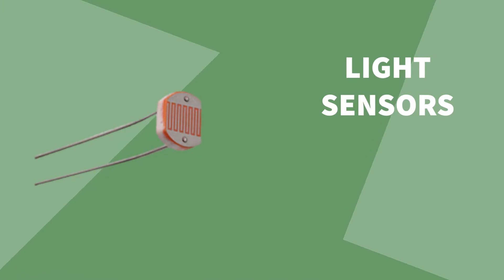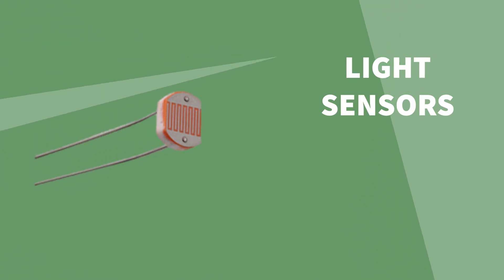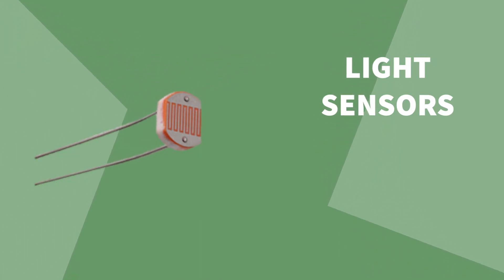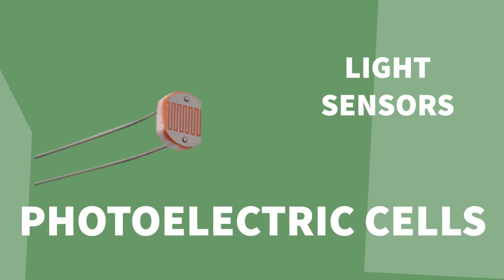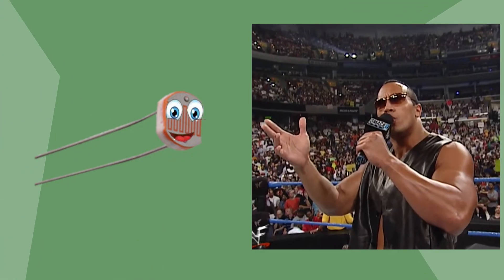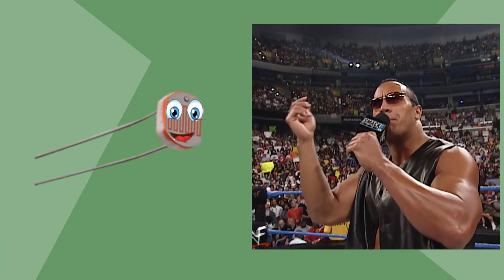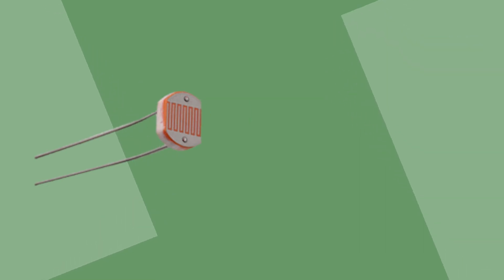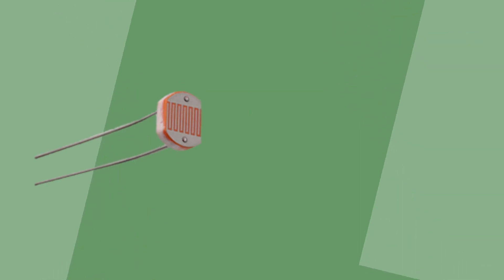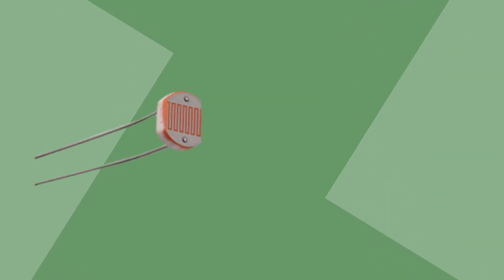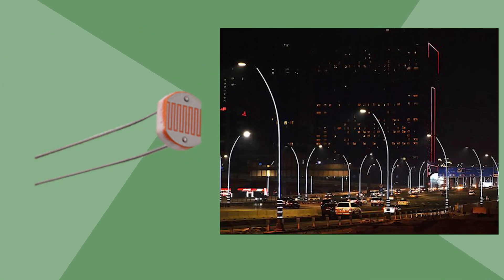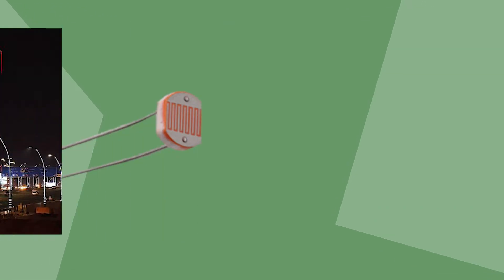Light sensors check for the light levels in a room. They do this by using something called photoelectric cells, which produce an electric current to show the brightness of the light they detect. Light sensors are used for switching street lights on or off.